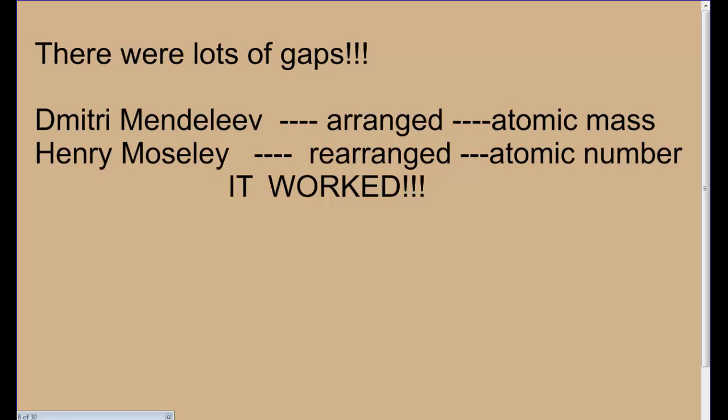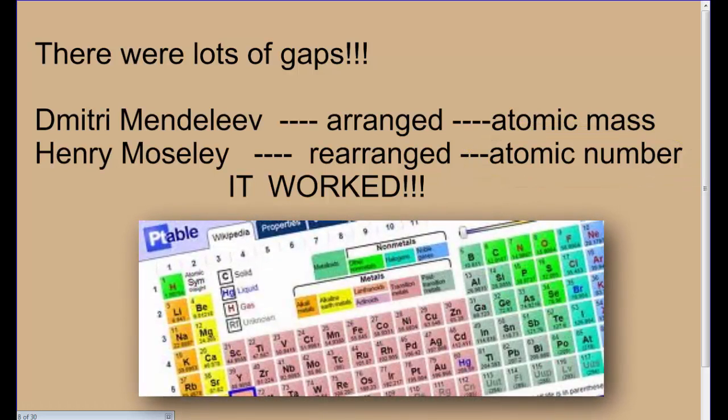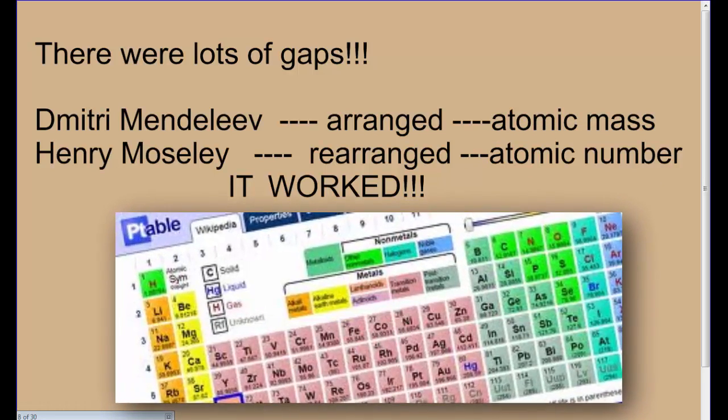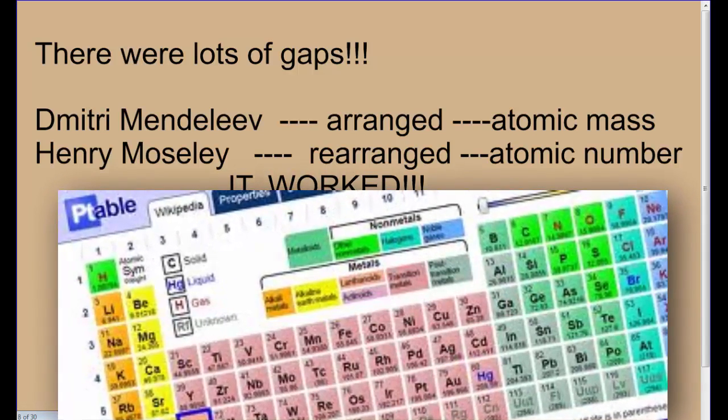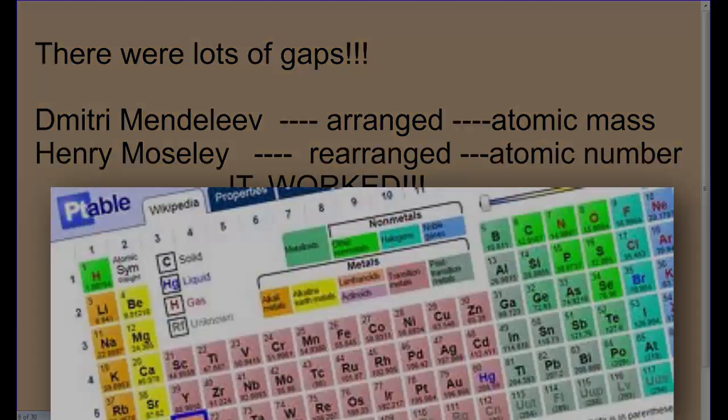There was a lot of gaps in Dmitri Mendeleev's periodic table. Remember, he arranged it by atomic mass. Henry Moseley was his student in his lab. He was probably a PhD student. He looked at what Mendeleev's table looked like and he rearranged it because there was a lot of gaps. And they just weren't satisfied with that. So they rearranged it. Henry Moseley rearranged according to atomic number. That's the number of protons in the nucleus. And it worked. A lot of the gaps were filled in. All of the properties were still in their same columns. All the trends were still working out. And that is how our modern periodic table looks now, in order of increasing atomic number.